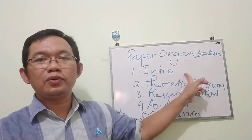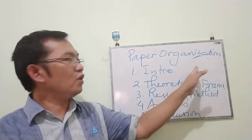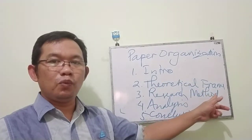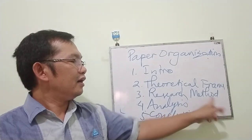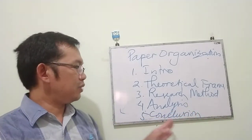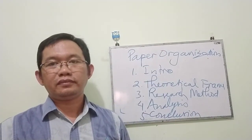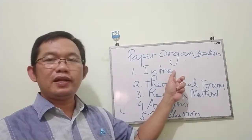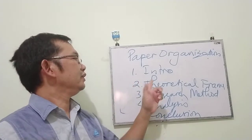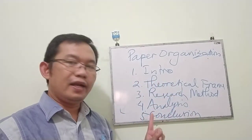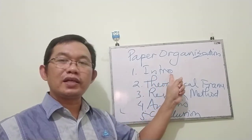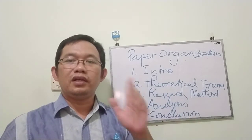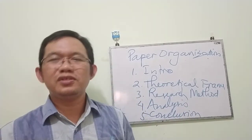You have to explain what each chapter covers. Introduction — what does it cover? Then theoretical framework, research method, analysis — what analysis will you explain? And then conclusion. In the paper organization section, you explain how many chapters your research will be — five chapters — and you explain them one by one. One paragraph for introduction is enough, one paragraph for theoretical review, one paragraph each for research method, analysis, and conclusion. Not very long — just five paragraphs.